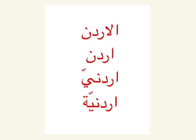Let's do an example together. We'll start with the word el-urden, which means Jordan. We notice it starts with an aleph lamb, so we remove it to get the root urden. We look at the end of the word and see it doesn't end in aleph, tamar buta, or ya and aleph, so we go on to the final step of adding the nispa adjective ending.